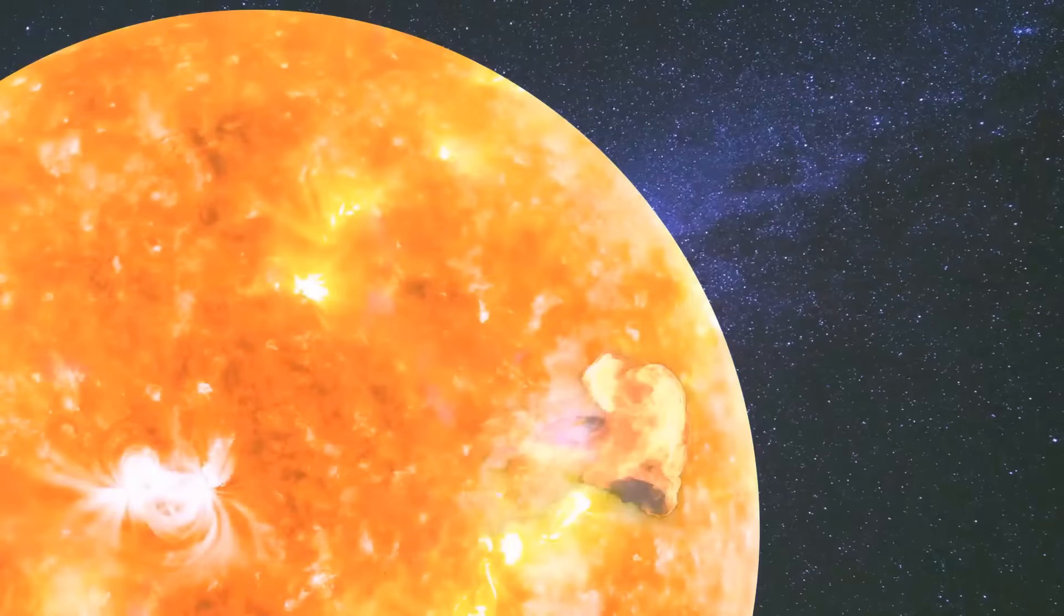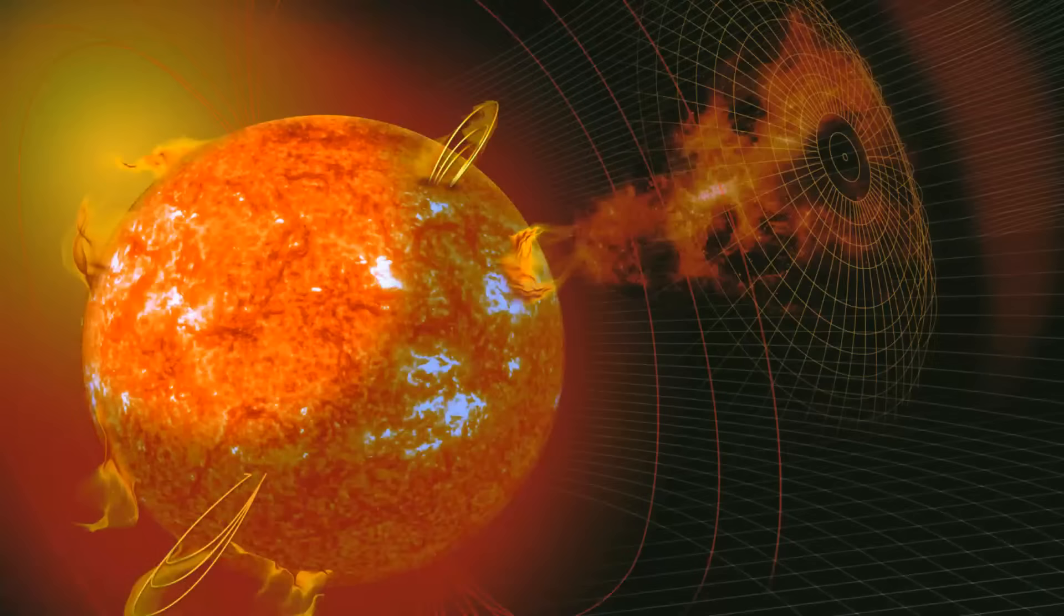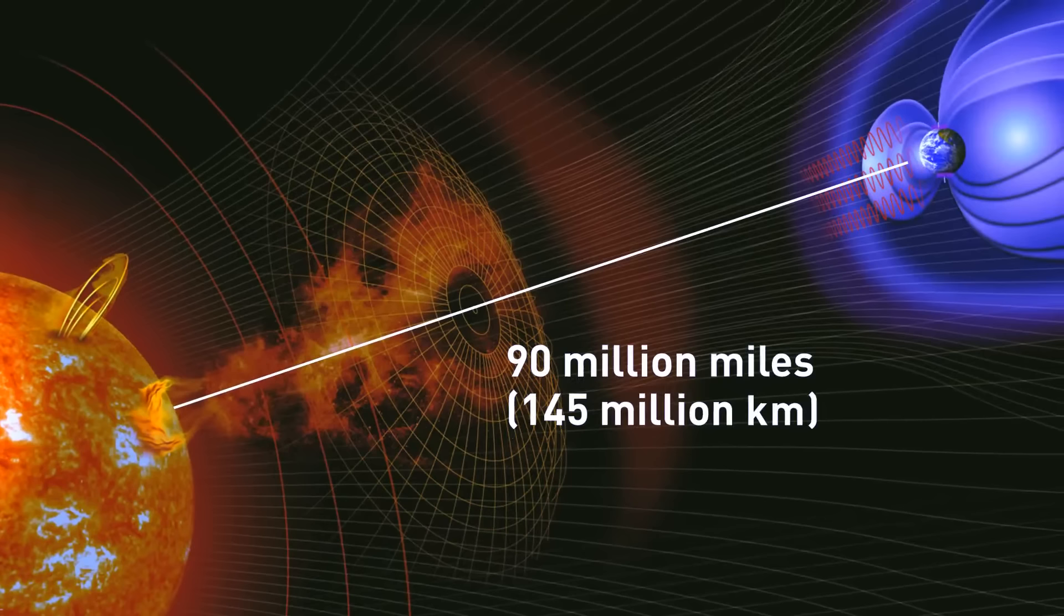He later described it as a white light flare. It was a very strong coronal mass ejection, CME. And in only 17.6 hours, this storm crossed the long way between the sun and our home planet, 90 million miles, and unleashed its force on us, even though this usually takes days.